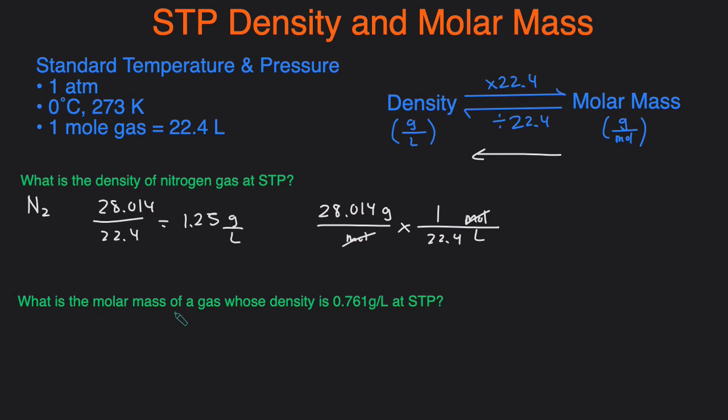Great, second problem. What is the molar mass of a gas whose density is 0.761 grams per liter at STP? So now this time we have the density and we want to figure out the molar mass so we're going in the forward direction. So all we do is take the density and multiply by 22.4.